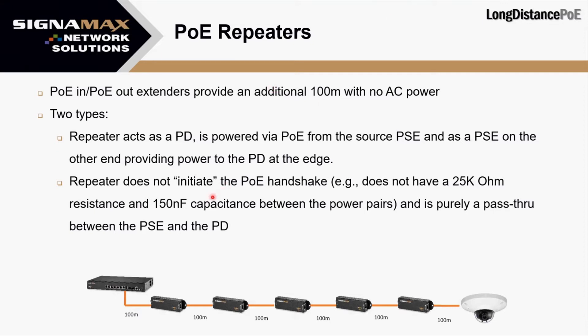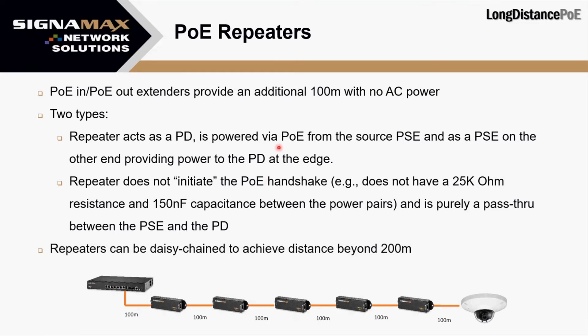Historically there were two types of repeaters: one where each side functions as a PD or PSE with full handshake, and a pass-through type that didn't initiate the handshake itself. Nowadays, almost all POE repeaters you'll find are the first type — they have the chip that functions as a PD. You can daisy-chain repeaters beyond 200 meters, but I don't recommend it for a few reasons: available power drops very quickly at further distances, it creates multiple points of failure, and from a maintenance standpoint these mid-line devices require enclosures and are harder to manage than other solutions.